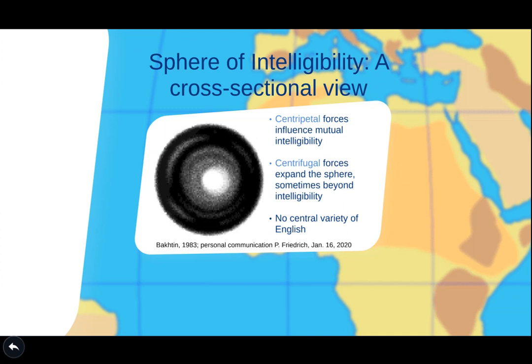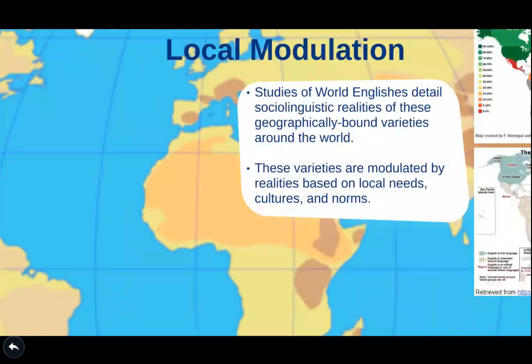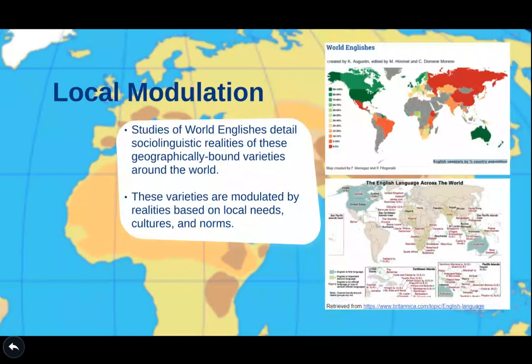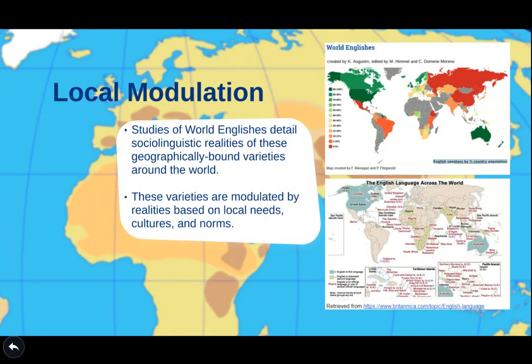Another thing to notice is that there is no central variety of English. Local modulation occurs usually within the studies of world Englishes. They detail the sociolinguistic realities of these geographically bound varieties around the world. These varieties are modulated by realities based on local needs, cultures, and norms.